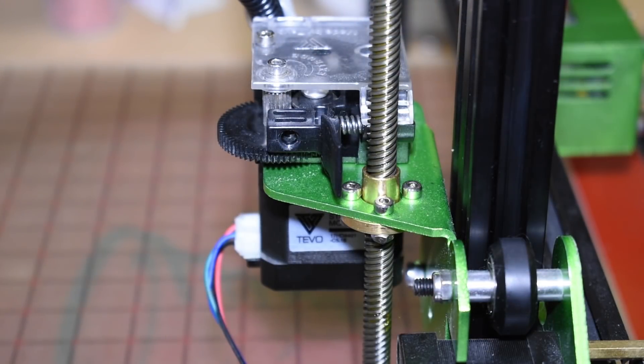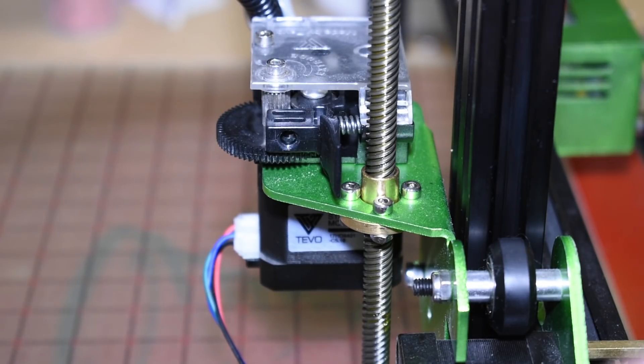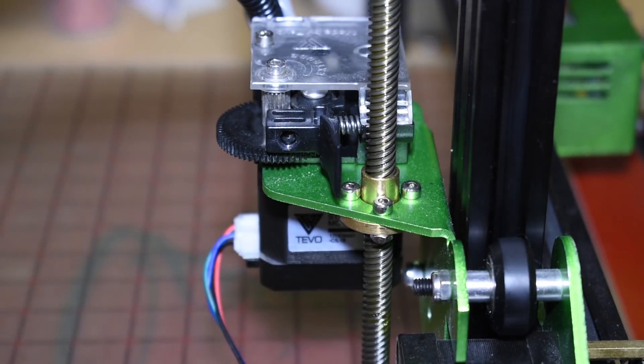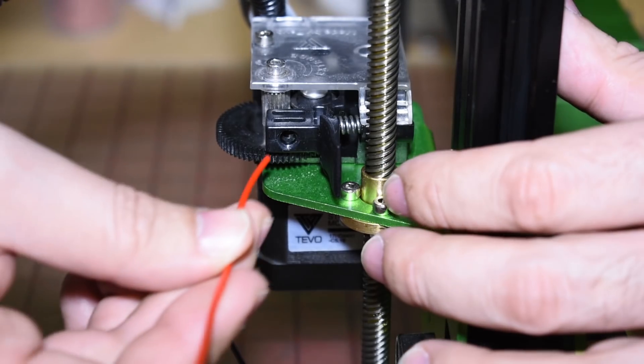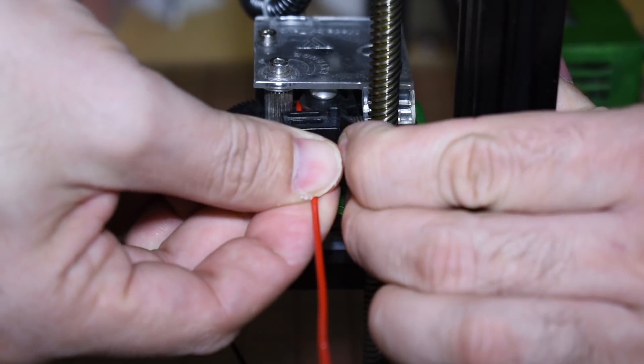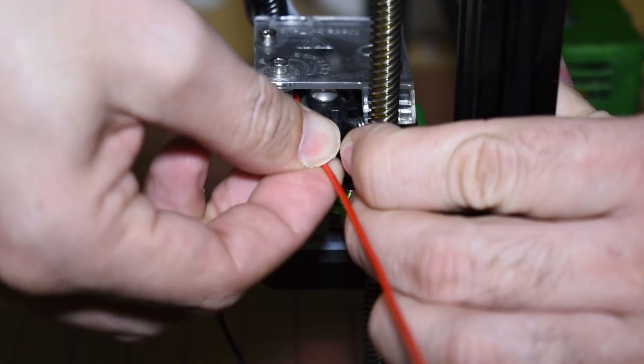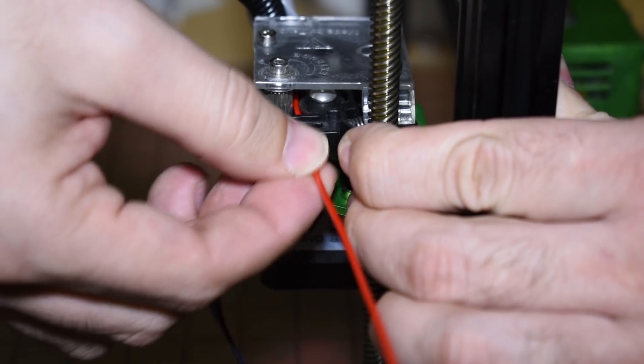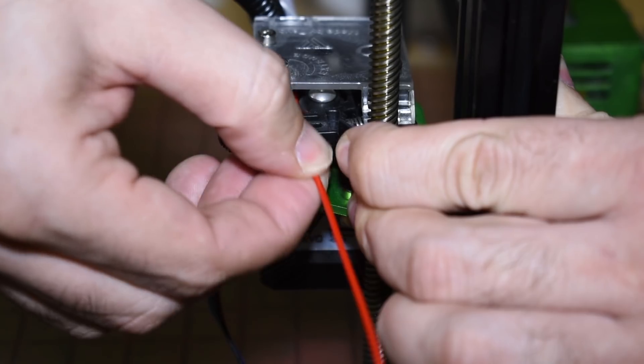Now, let's load some filament. Make sure that you have the stepper motors disabled. To load the filament, you just need to pull the handle, pass the filament through, and keep in mind that the filament must be in line with the bearing inside. And push it all the way until it reaches the nozzle.